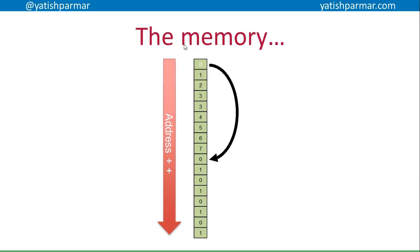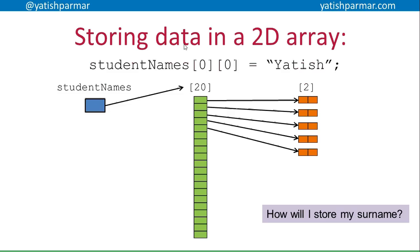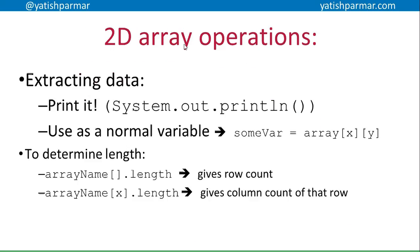Those consecutive values represent a row of the array. So if I had that 2D array storing student names and wanted to store a first name, I'd use `studentNames[0][0] = "Yattish"`. That shoves the value into the first element — the first row of the outer single-dimensional array, which points at another one-dimensional array in memory where the actual data is stored. 2D arrays operate the same way as 1D arrays.